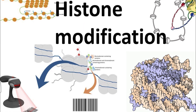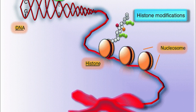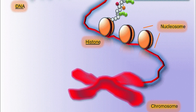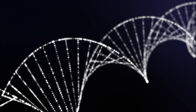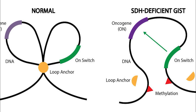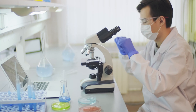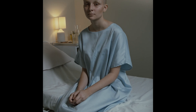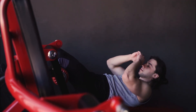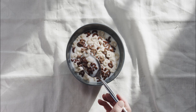Another example of epigenetics is histone modification, which is the alteration of the proteins that surround and help package DNA into chromosomes. These modifications can affect the accessibility of DNA, influencing the expression of specific genes. Epigenetic changes can have a significant impact on an individual's health and well-being. Research has shown that certain epigenetic changes can contribute to the development of cancer and other diseases. On the other hand, positive lifestyle changes, such as exercise and a healthy diet, can also have epigenetic benefits.